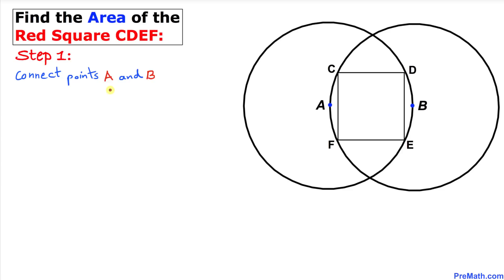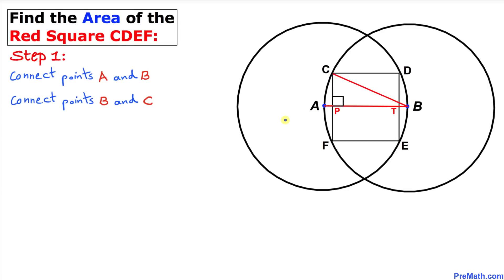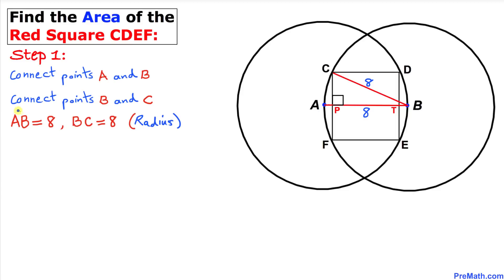Let's connect points A and B, and also connect point B and C. Point A is the center of the left-hand side circle, and point B is the center of the right-hand side circle. Therefore, line segment AB is a radius equal to 8 units, and likewise BC is a radius equal to 8 units. So AB = 8 and BC = 8.